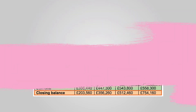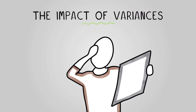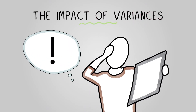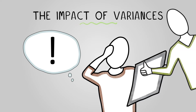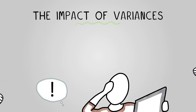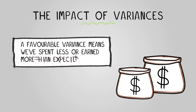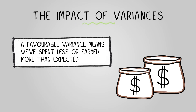So you've planned your budgets, but what happens when things go off track — where our actual figures don't match our budget? We call this a variance, and these can be deemed either favorable or adverse. A favorable variance means we've spent less or earned more than expected, which is of course good for a business as it means they have made more significant profits than expected.